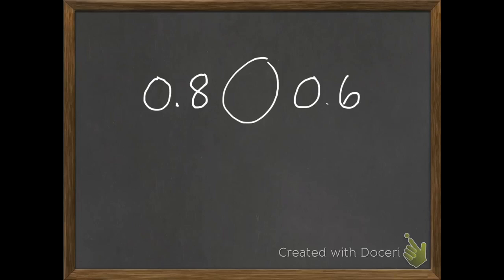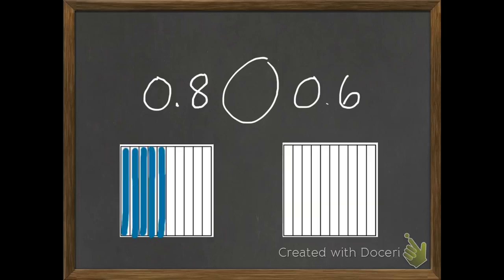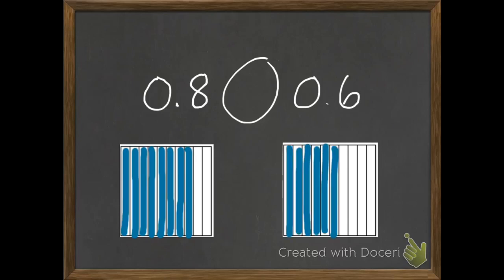There are several different strategies we can use. You may be able to tell just by looking at it, but you can also use pictures. So I can draw my 8 tenths, I can draw my 6 tenths, and I can tell that the 8 tenths has more of our box shaded. So the answer is 8 tenths.